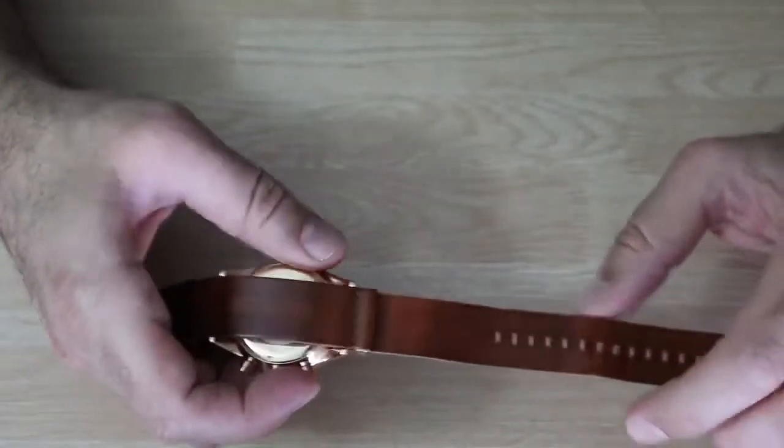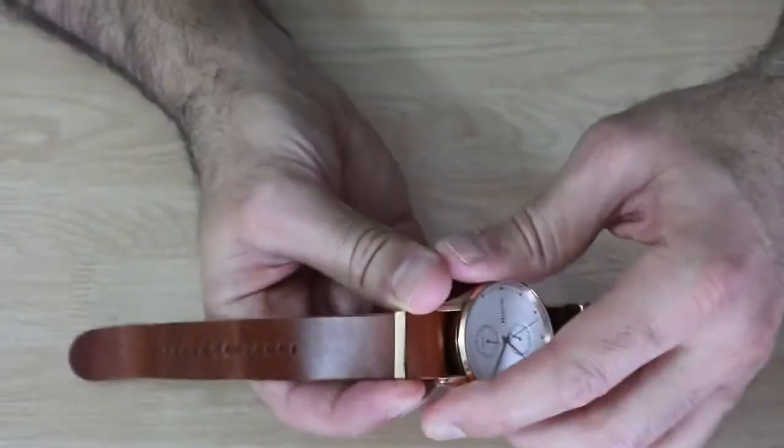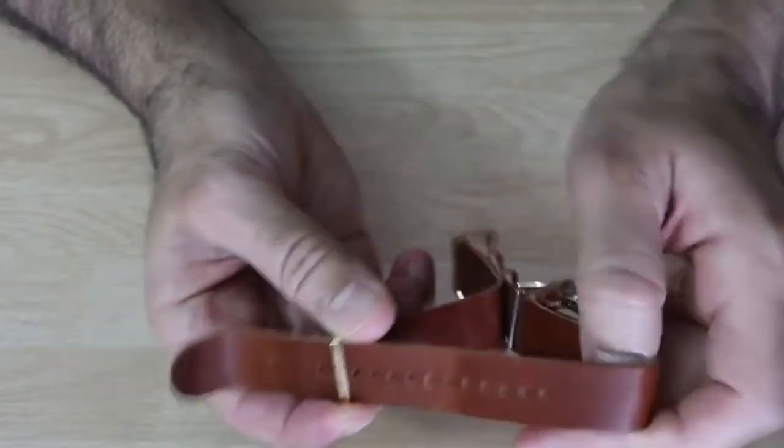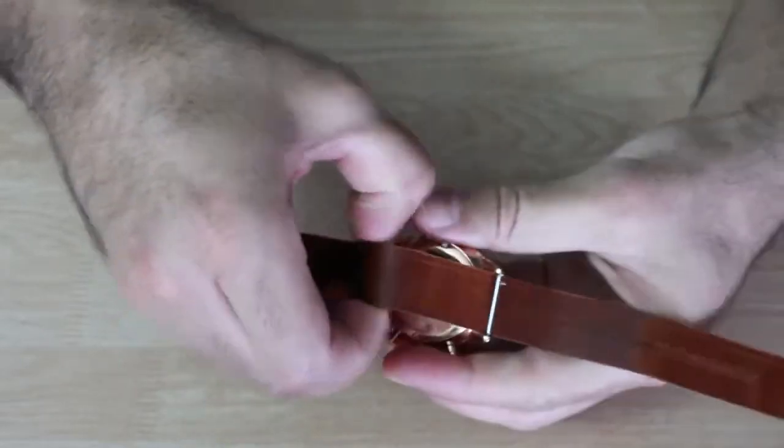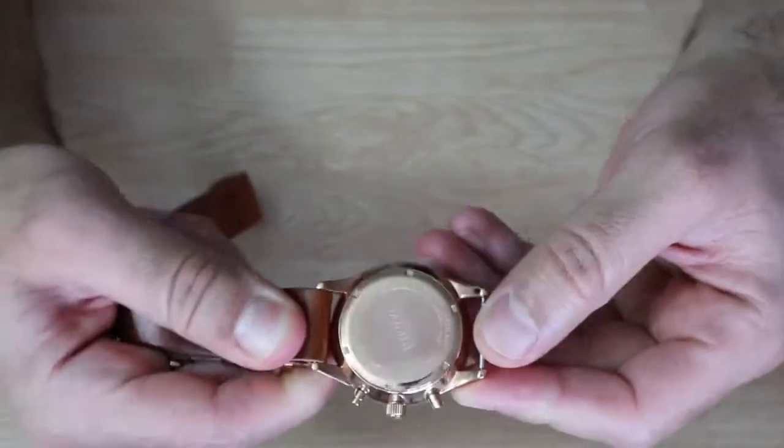First you need to remove the strap of the watch. It's very easy for the Movement Voyager to remove the strap, so just slide this here like this and then slide it here and you have the back of the watch exposed.